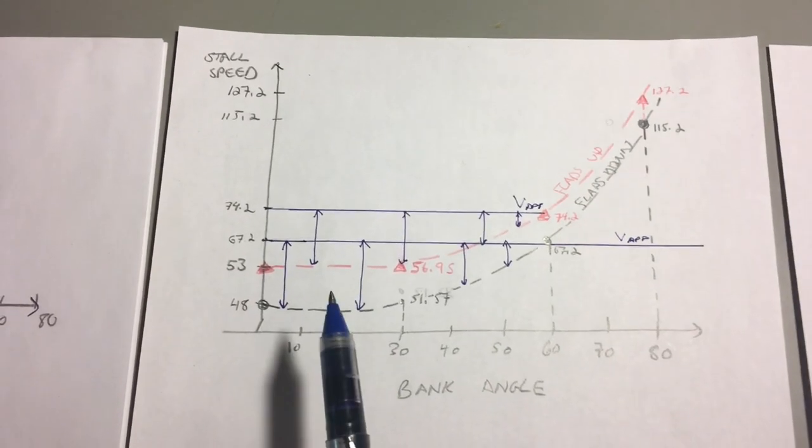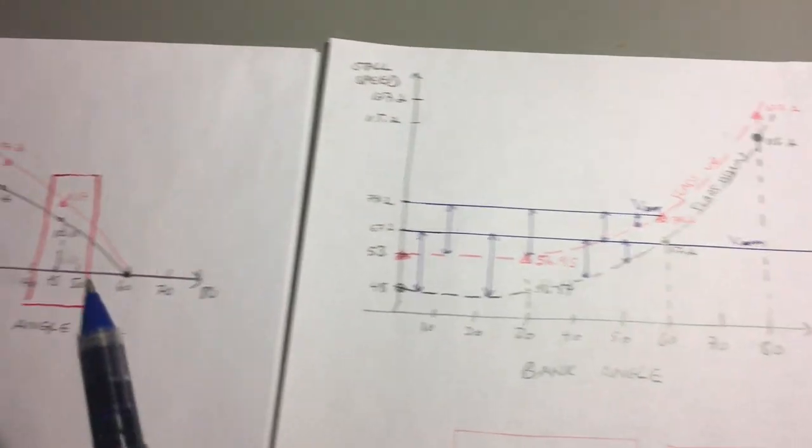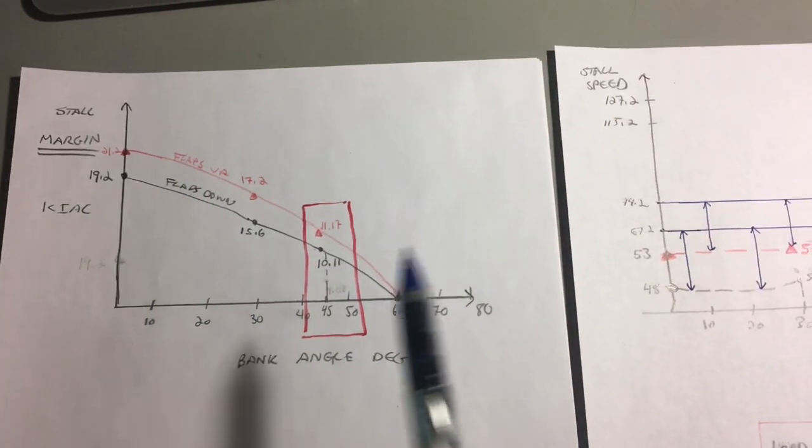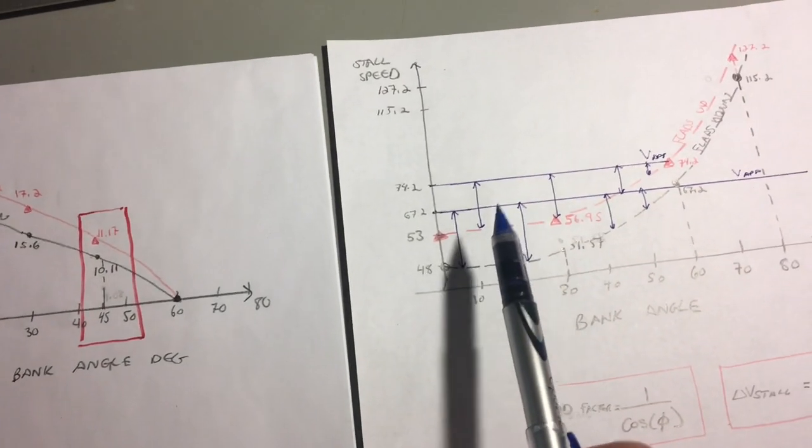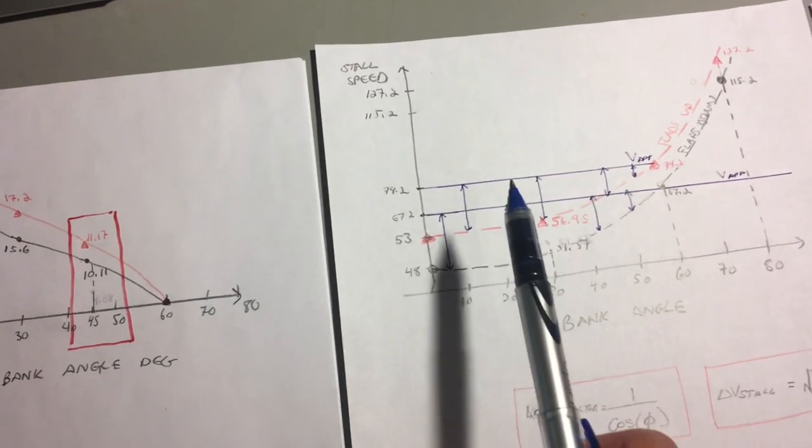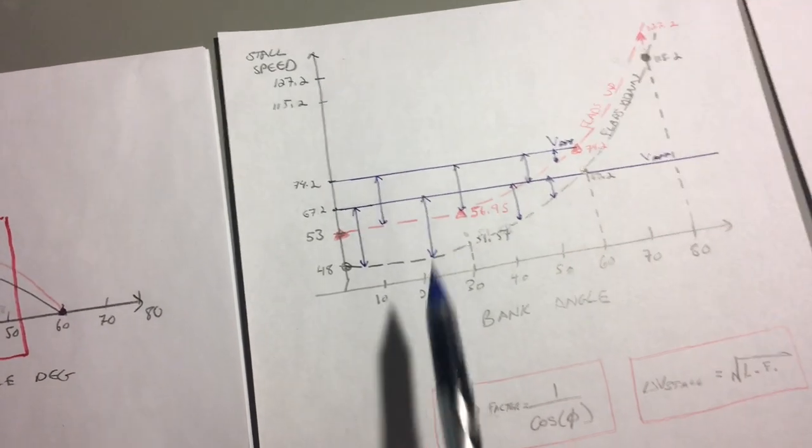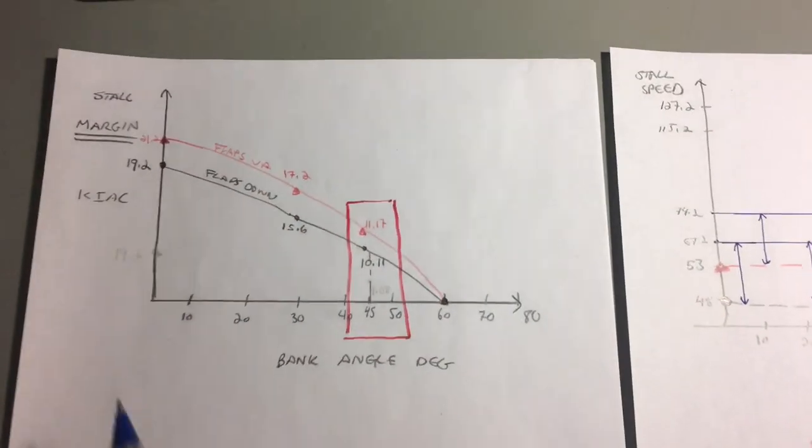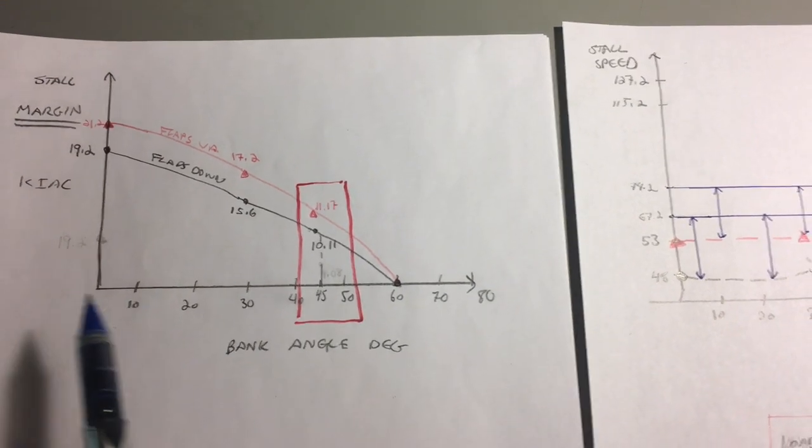To make this a little bit easier to see pictorially I've redrawn it to this graph here on the left, where this graph is basically the height difference between the blue line and the black curve and the height difference between the blue line up top and the red curve. It's a graph of the stall margin.